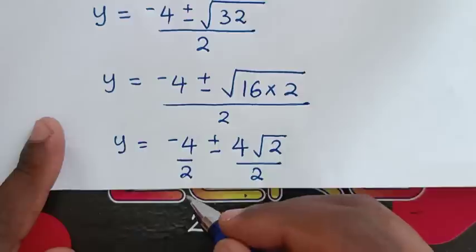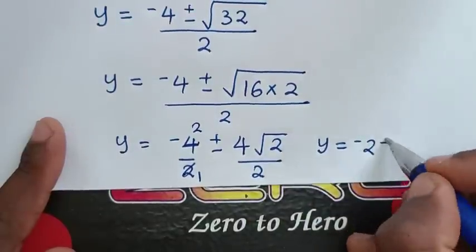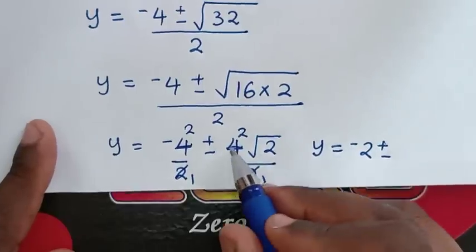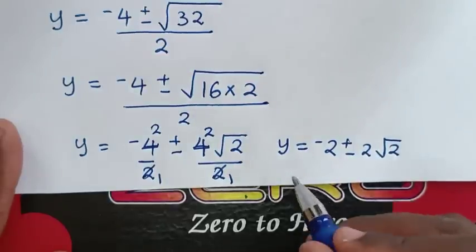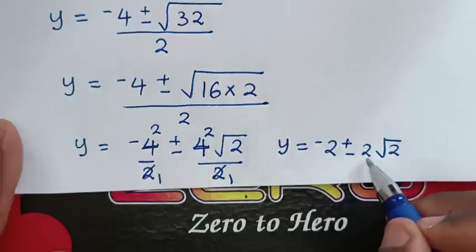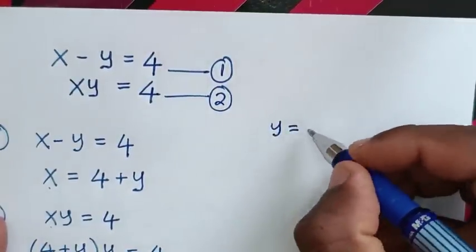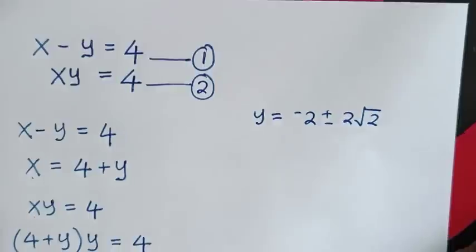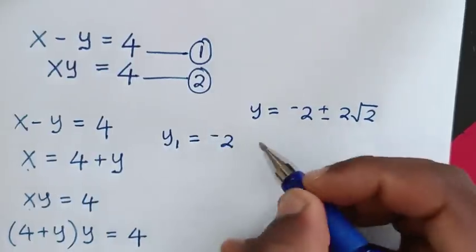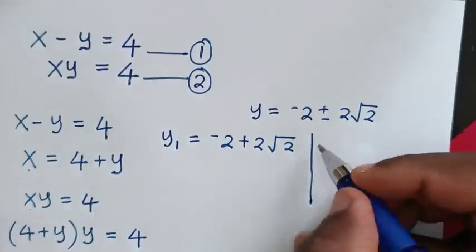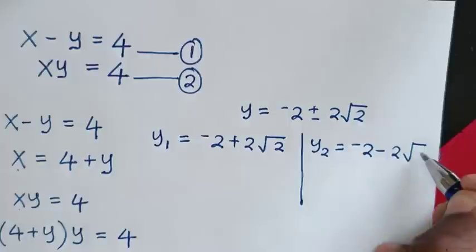Simplifying by dividing each part by 2: negative 4 over 2 is negative 2, and 4 square root of 2 over 2 is 2 square root of 2. So we have two solutions: y is equal to negative 2 plus or minus 2 square root of 2. Therefore y1 is equal to negative 2 plus 2 square root of 2, and y2 is equal to negative 2 minus 2 square root of 2.